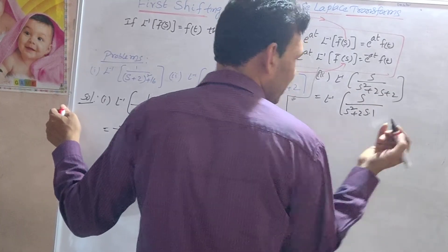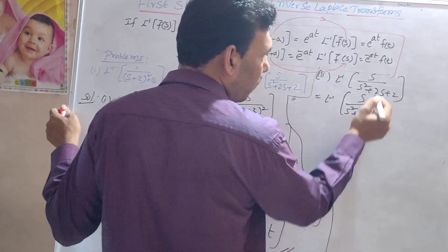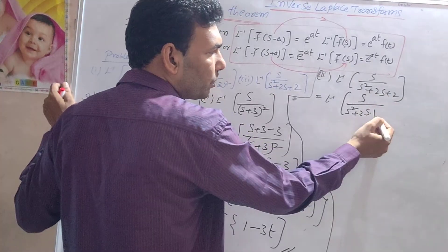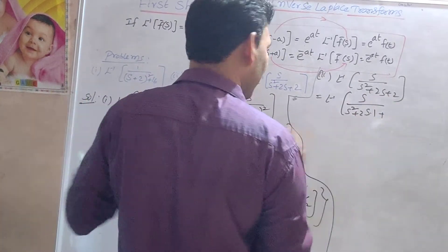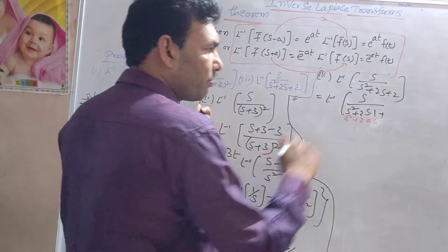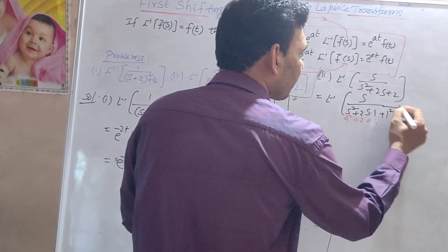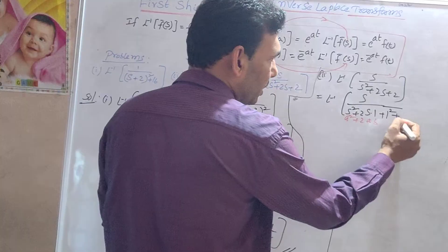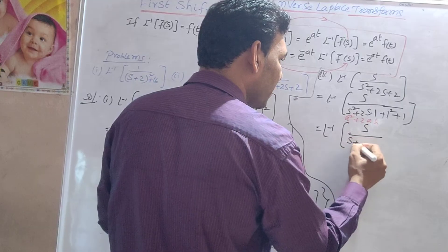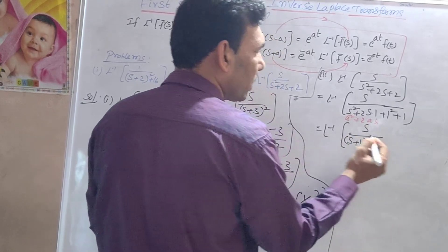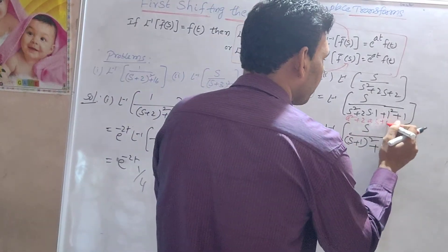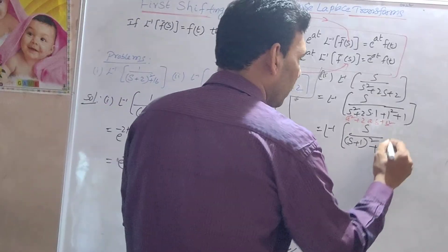In s² + 2s + 2: comparing with (a + b)² = a² + 2ab + b², we have a = s, 2ab = 2s means b = 1, and b² = 1. So s² + 2s + 2 = (s + 1)² + 1. We can write L inverse of s by [(s+1)² + 1].